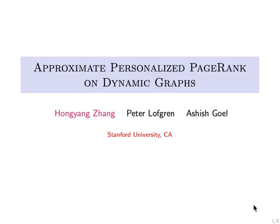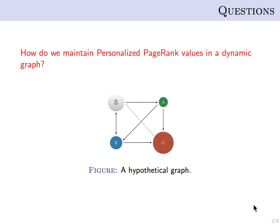Hi, my name is Hongyang. I want to talk about a joint work with Peter Lofgren and Ashish Goyle, all from Stanford University. The question we're interested in in this work is how do we maintain personalized PageRank values in a dynamic graph when the edges are being inserted or deleted?